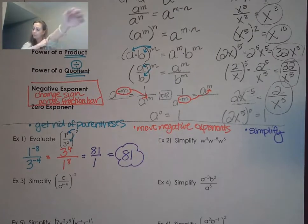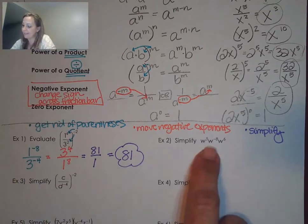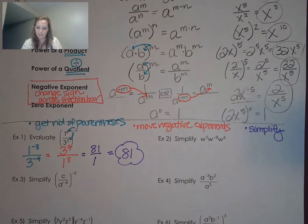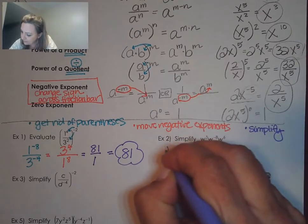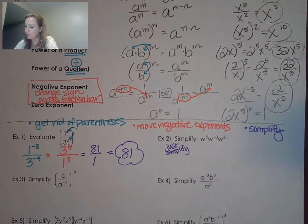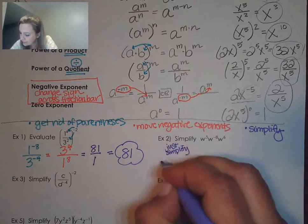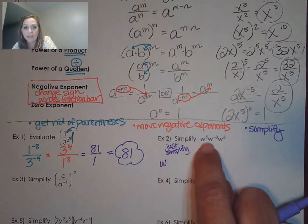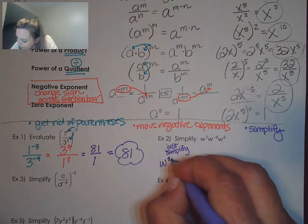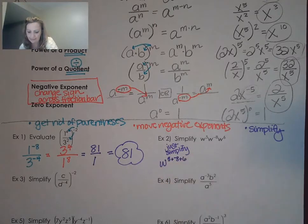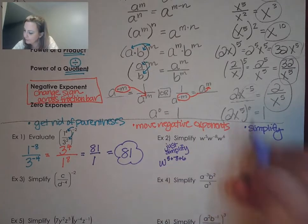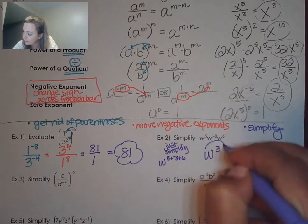In example two, I notice that I just have a bunch of multiplication — so what I would do is just simplify. I have the same base W and I'm multiplying powers, so I use the product of powers and add all the exponents together. 5 plus negative 8 is negative 3, plus 6 is 3. Our answer would just be W cubed.